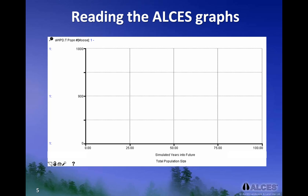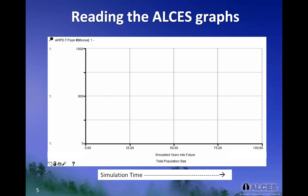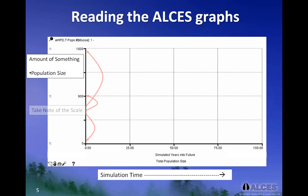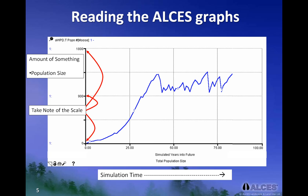Before we begin, let's quickly review the format of the graphs that we will be looking at. Time is shown along the bottom of the graph, or x-axis. For the simulation period, the model started at time zero and ran for 100 years. Along the vertical, or y-axis, the graphs will show you the population size. It is also important to take note of the scale of the vertical axis to inform you about the relative change of population size over time. Another important point to understand about the model simulations is that if a population is harvested, it starts at year 50, and harvesting continues to the end of the simulation time.